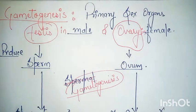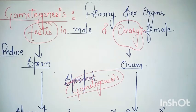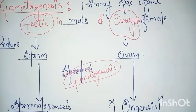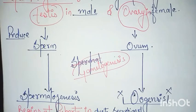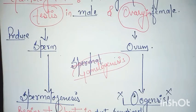So come to the topic gametogenesis. As I told you, gametogenesis is a process in which the cell undergoes meiosis to form gametes. Gametes - testes in male and ovary in female - produce sperm and ovum respectively.